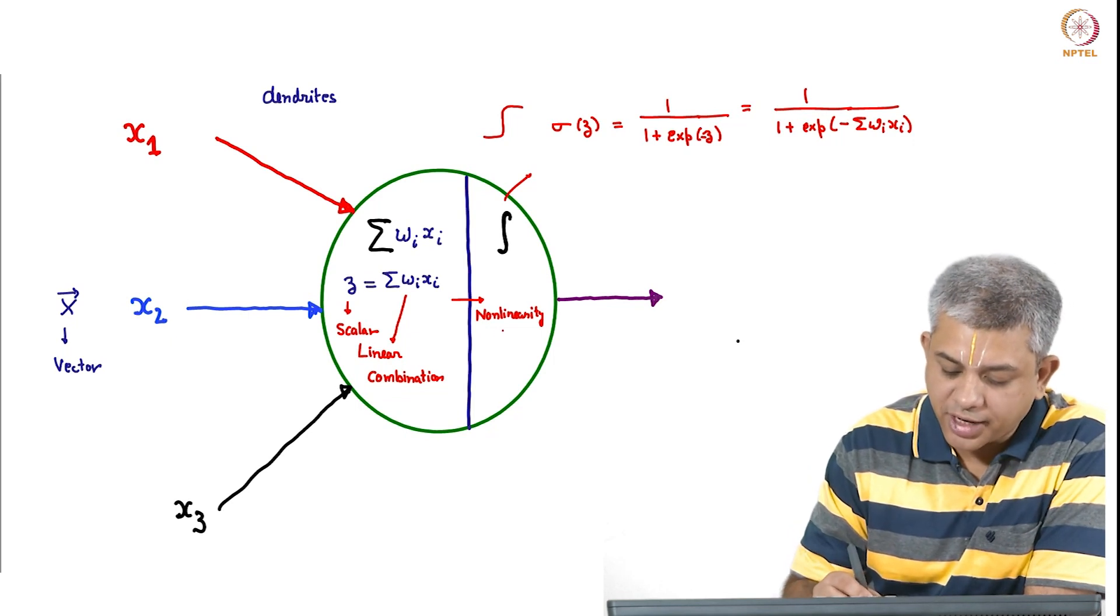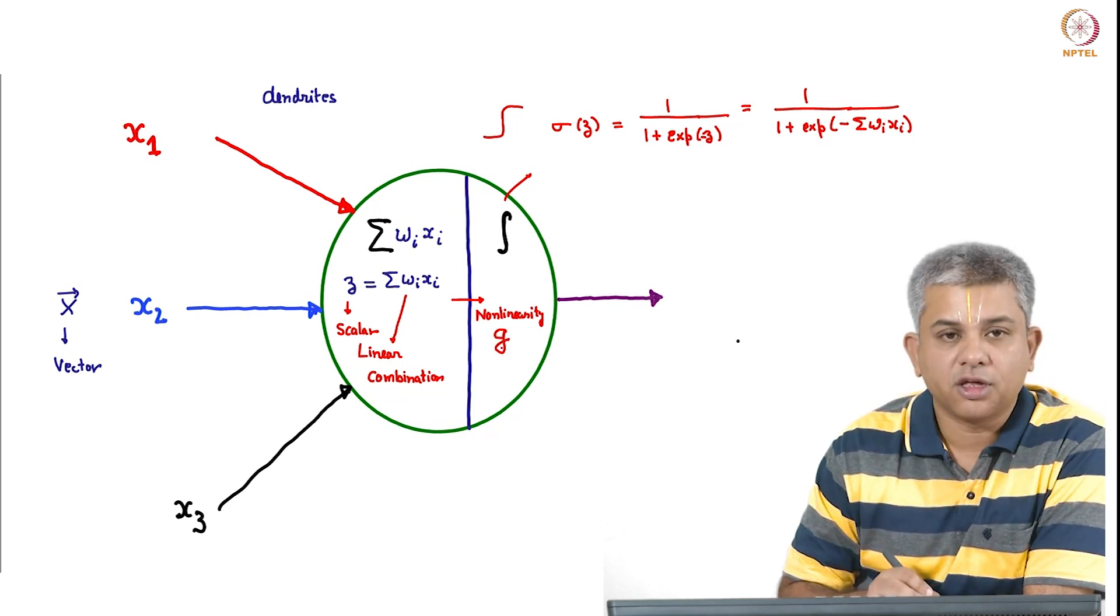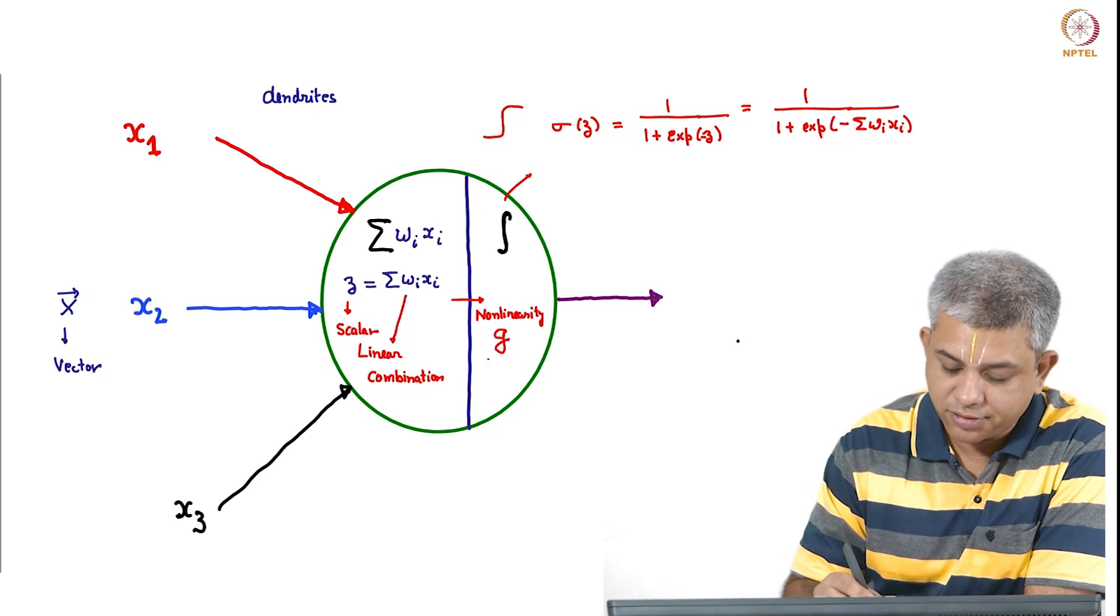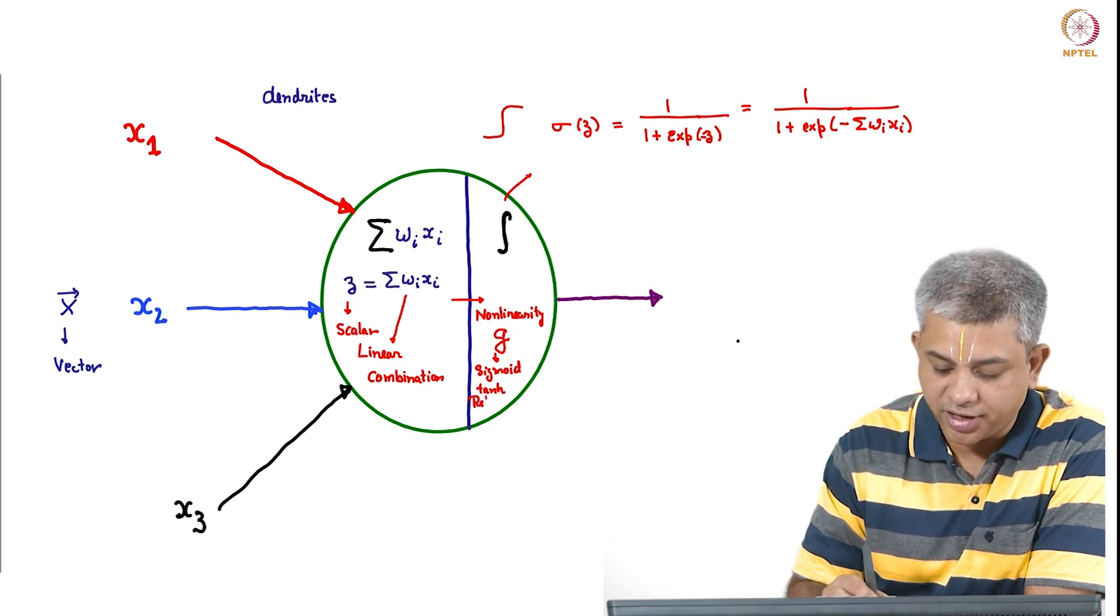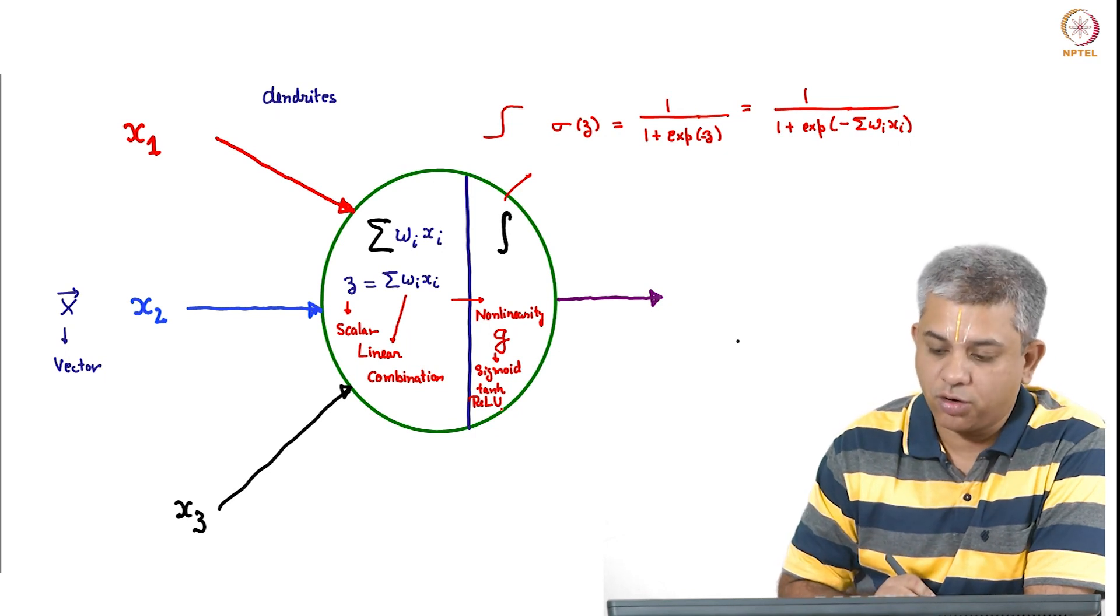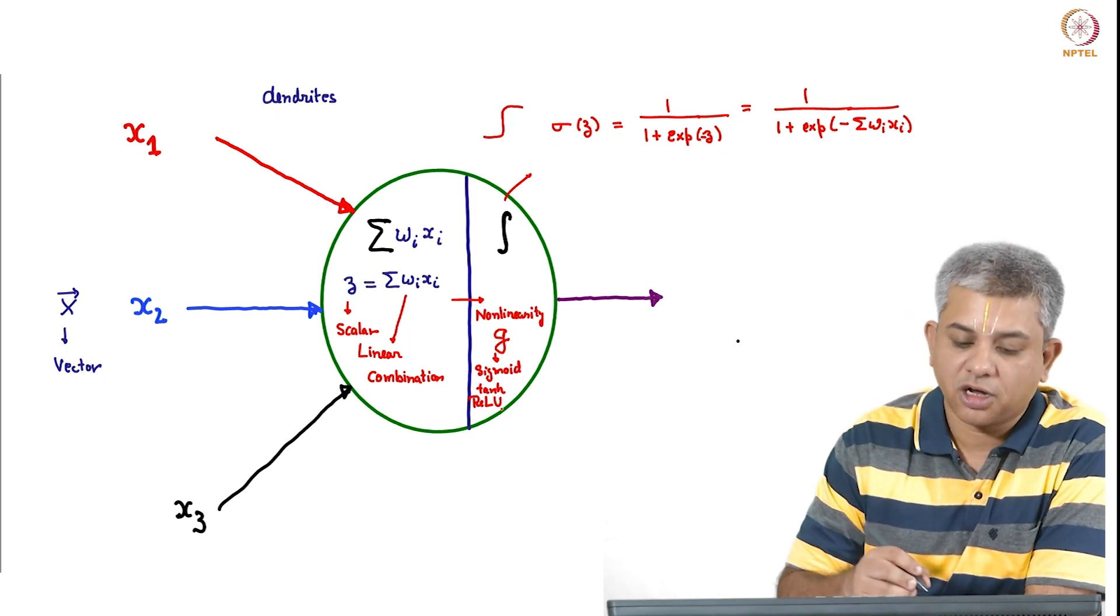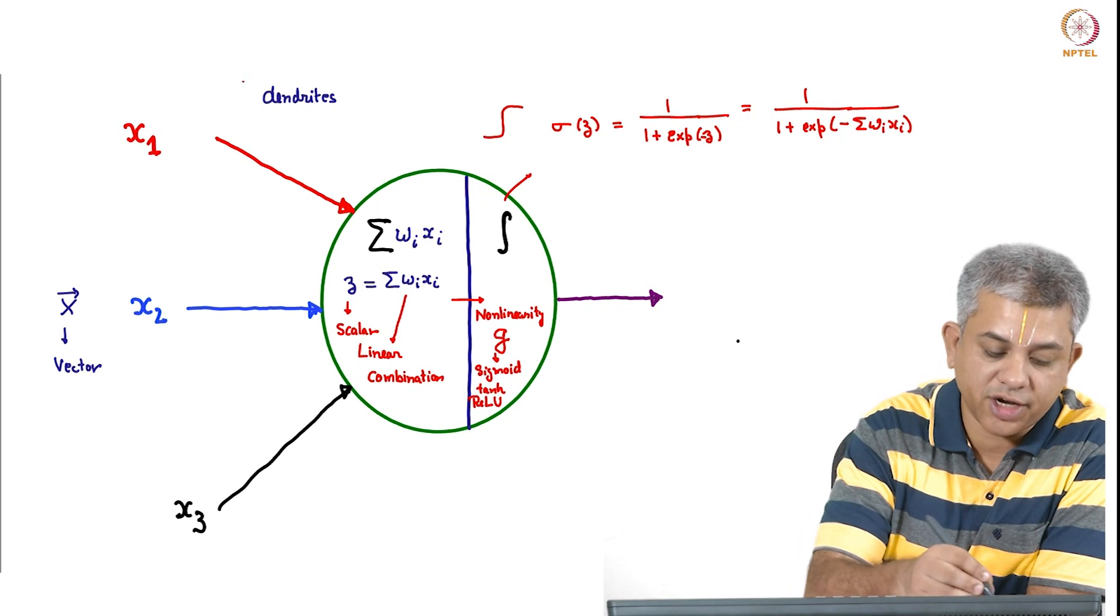So we call this nonlinearity in general g. This might be the sigmoid. It could be other functions which we will see later, for example tanh. We also have another thing called the rectified linear unit or relu. So any of these nonlinearities could be used.